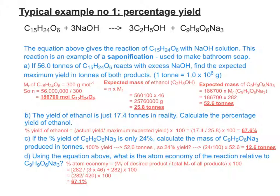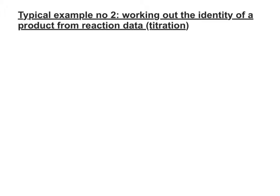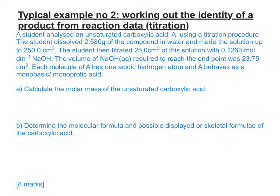Now let's look at another example of a more challenging question — this time you're given titration data or reaction data and need to deduce the identity of a product. We'll look at how to work out the identity of a product from titration data first, then a third example using mass data. It's an eight-mark question with a lot of information to digest. You might want to pause and copy the question down, then highlight the data you'll be using — for example, 2.580 and the connection between 25 cm³ and 250 cm³.